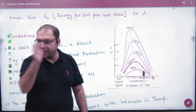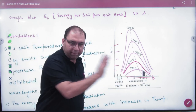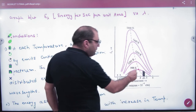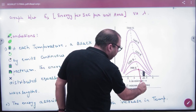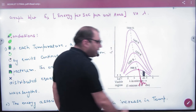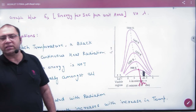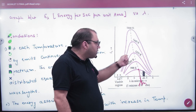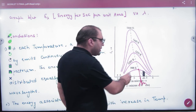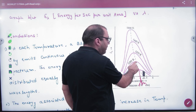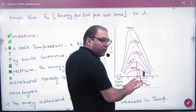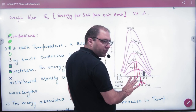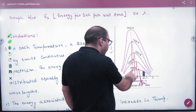The basic pattern remains: first energy increases, then reaches a maximum, then decreases. When the temperature was 998 Kelvin, the maximum came at a certain wavelength, called lambda m — the wavelength at which energy is maximum. When the temperature is increased, the peak shifts to a different, smaller value of lambda max.